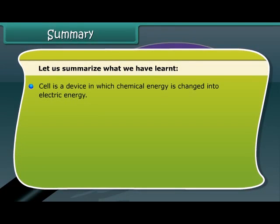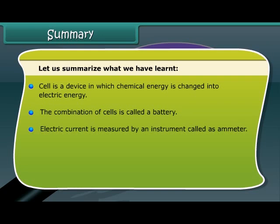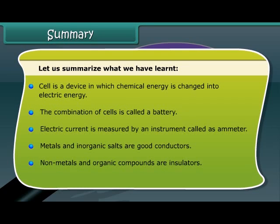A cell is a device in which chemical energy is changed into electric energy. The combination of cells is called a battery. Electric current is measured by an instrument called an ammeter. Metals and inorganic salts are good conductors. Non-metals and organic compounds are insulators which control the transmission of electricity.